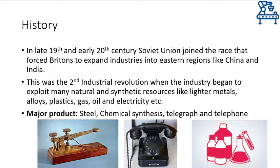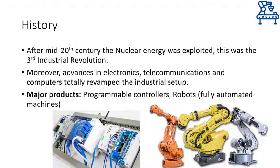Furthermore, the Soviet Union joined the race in the late 19th and early 20th century, which forced Britons to expand industries to other neighbouring parts — that is, China and India. The second industrial revolution was the era when industries became capable of processing many other natural and synthetic resources like light metals, alloys, plastics, gas, oil, electricity, and more. Some of the major products of this era were steel, chemicals, telegraph, and telephone. From here, the technological revolution picked up pace, and humans quickly developed more sophisticated machinery, which forced the invention of programmable electronic controllers.